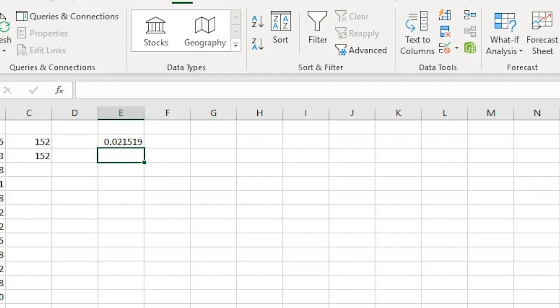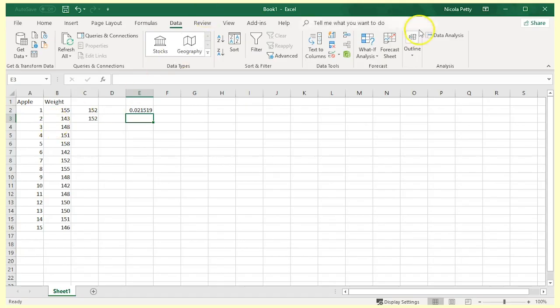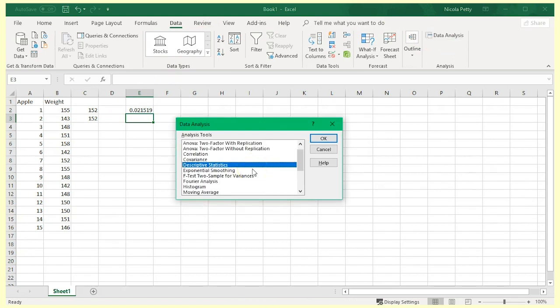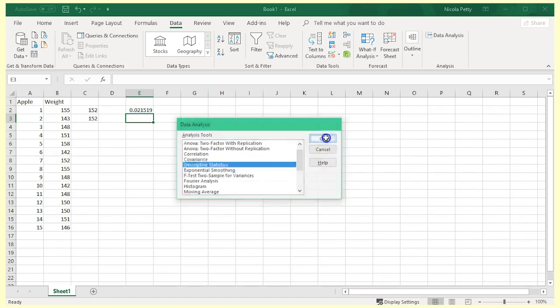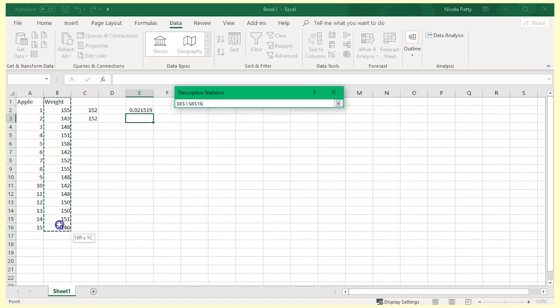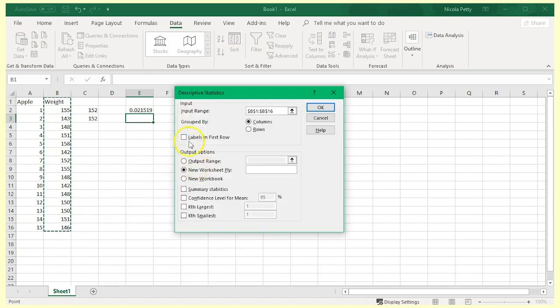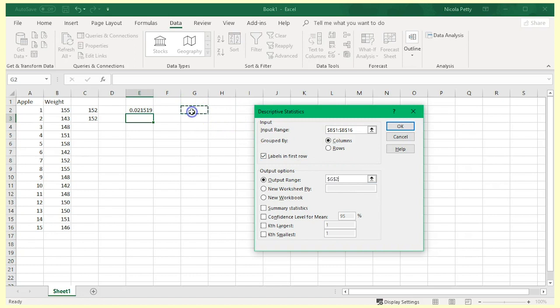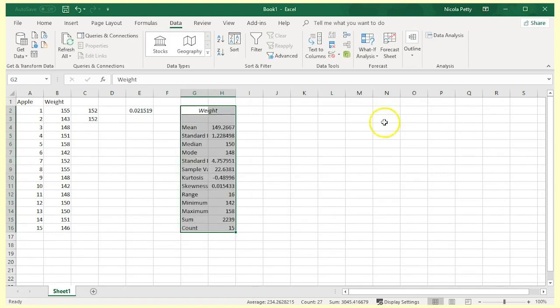Now let us see where the p-value comes from. Click on the data tab, and then the data analysis tools. Select descriptive statistics. Put in the input range, include the title at the top, and select labels in the first row. Click on output range, and select the cell in the top row to the right of the data. Select summary statistics, and here we are.